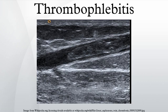Causes: Thrombophlebitis is related to a thrombus in a superficial vein. Risk factors include disorders related to increased tendency for blood clotting, injury to the vein wall, and reduced speed of blood in the vein.